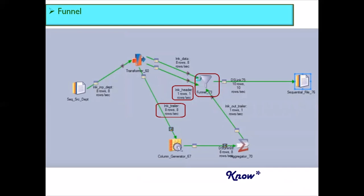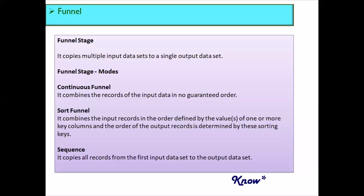To implement this logic, the important stage to notice in the job design is the funnel stage. The funnel stage combines data from multiple input sources or input streams and outputs it into a single output stream. In this job design, we have an output stream from the transformer stage representing the header stream, along with a trailer stream and the data records — all combined using the funnel stage and written to the target sequential file stage.